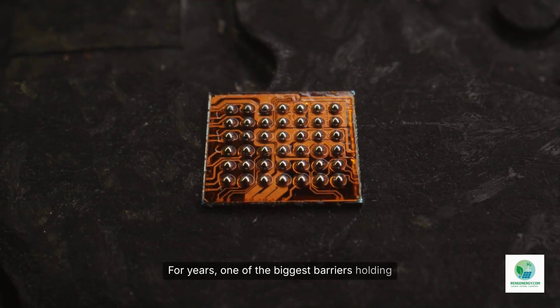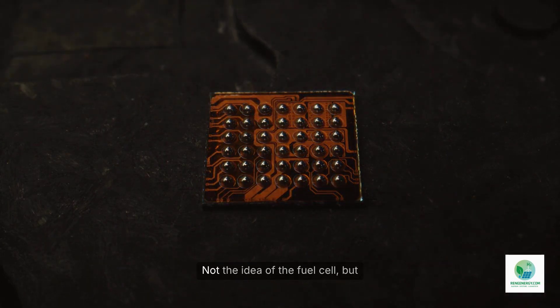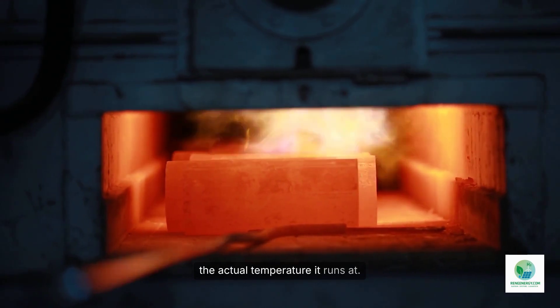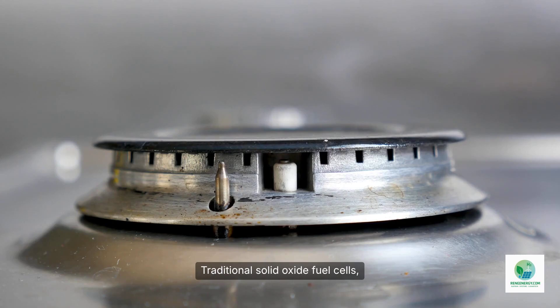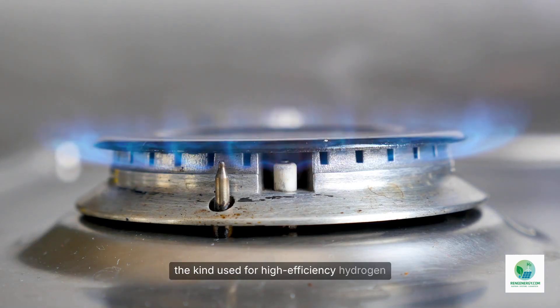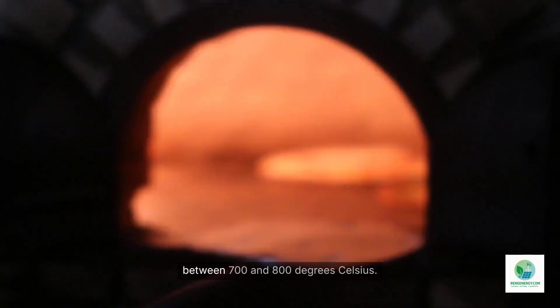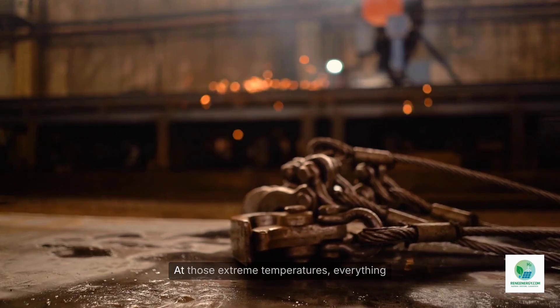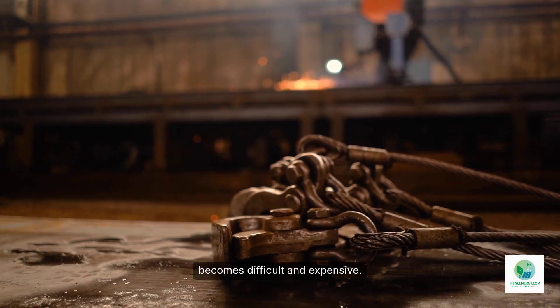For years, one of the biggest barriers holding hydrogen back has been the fuel cell itself. Not the idea of the fuel cell, but the actual temperature it runs at. Traditional solid oxide fuel cells, the kind used for high-efficiency hydrogen power generation, operate at temperatures between 700 and 800 degrees Celsius. At those extreme temperatures, everything becomes difficult and expensive.